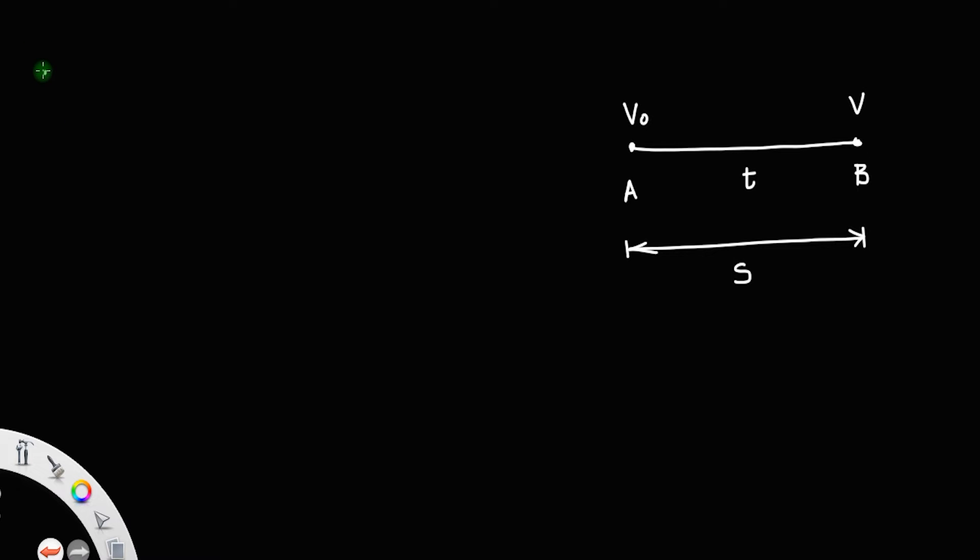Then we have the displacement s equals v average times time. Since the body is traveling through a straight line, its distance and displacement remain the same, so you can call it either distance or displacement.